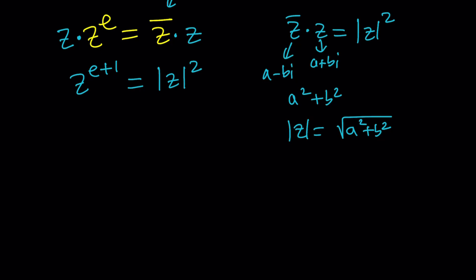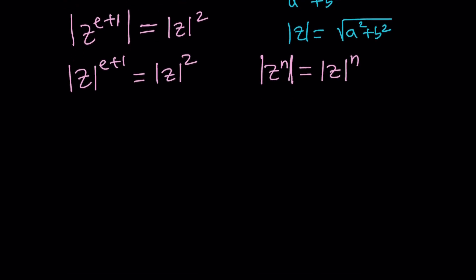The absolute value is already on the right hand side, so it wouldn't hurt to take the absolute value one more time. Whenever you have something like Z to the power N, and you take the absolute value, this just turns into the absolute value of Z to the power N. We're going to take the absolute value.